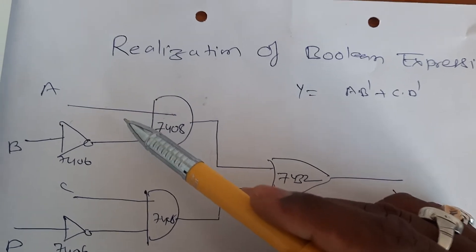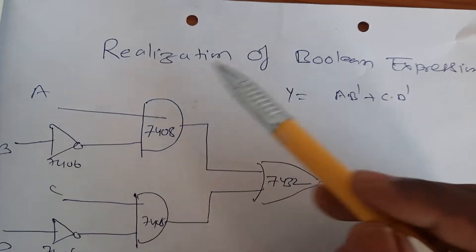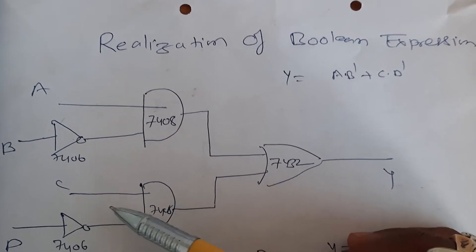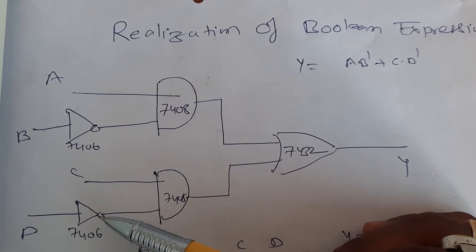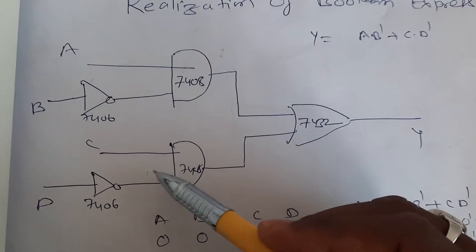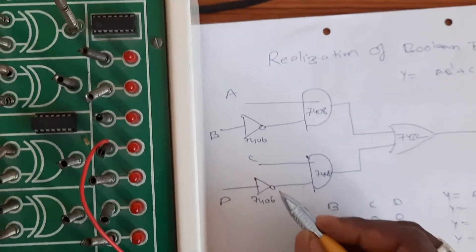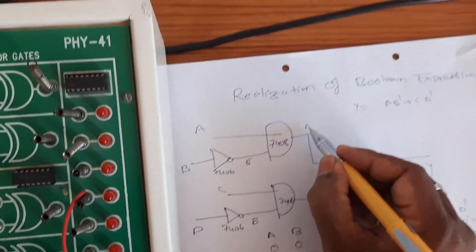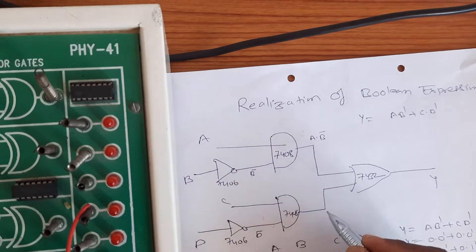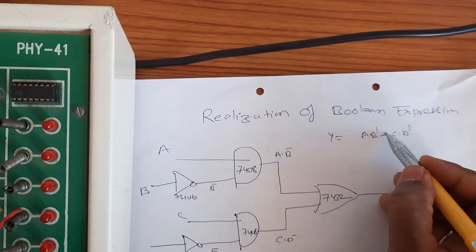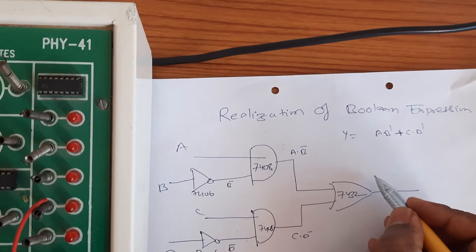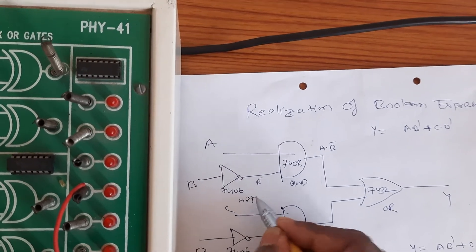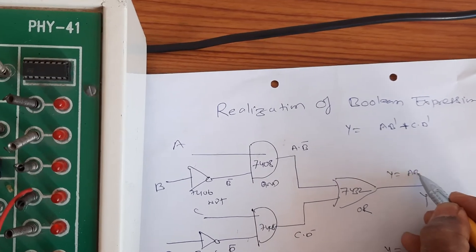We will take two inputs: one input is A, and B is complemented, so that's why we are using a NOT gate. Similarly we are having C·D, so AND operation will be performed between C and D, and D is complemented, so we are taking the output from the inverter. This gives us D̄ and B̄. So finally we receive A·B̄ and C·D̄, and since there is a plus operation in the expression, it performs addition via OR gate. So the final expression is AB̄ + CD̄.